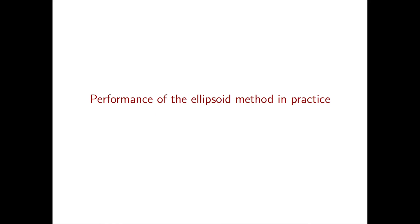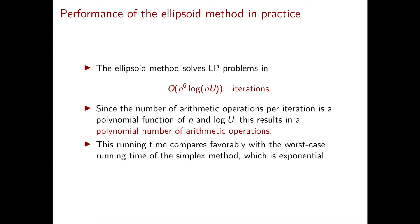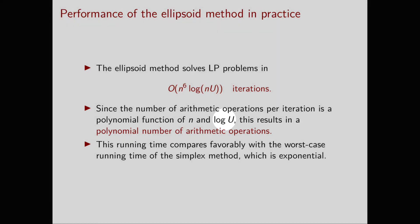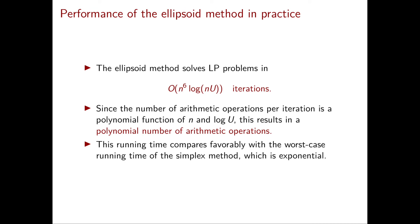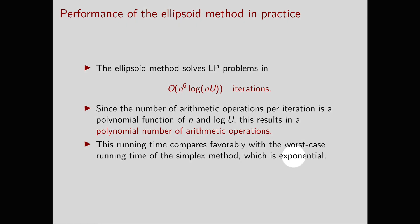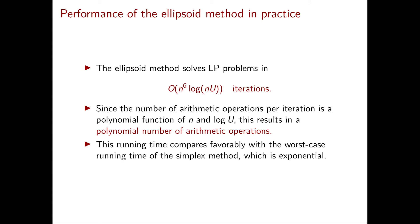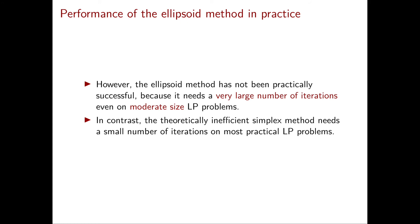Next, let's discuss the performance of the ellipsoid method in practice, and first briefly recap its theoretical performance. The ellipsoid method solves linear programming problems in O(n^6 log n · U) iterations, and in each iteration the number of arithmetic operations is polynomial in n and log U. So the total number of arithmetic operations is polynomial in n and log U. Hence, the worst-case running time of the ellipsoid method is much better than the worst-case running time of the simplex method, which can be exponential in n.